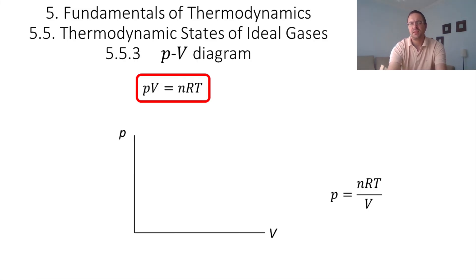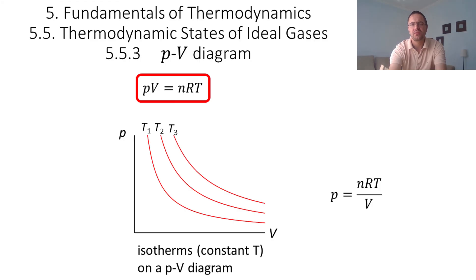And so on the PV diagram, we can represent the curves that vary as 1 over V. And we have a different curve for each different temperature. And each of those curves are called isotherms because they represent constant temperatures. And we will use these diagrams when we want to calculate the work done by a gas.